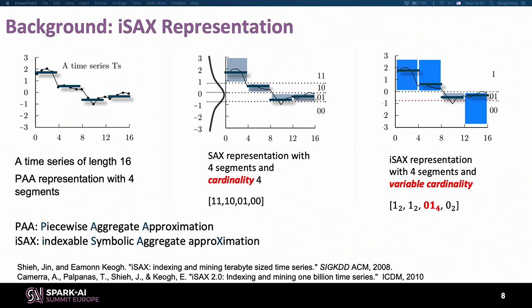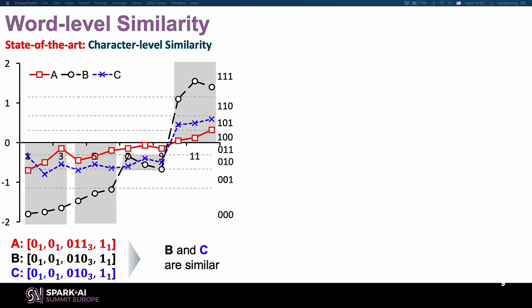We propose a new index technology. Let's look at the limitation of the current method, which we call character-level similarity. With three time series — red, blue, and black — we can easily see that the red and blue ones are similar. But if we use iSAX representation, we find that we cannot capture this similarity. The iSAX result shows the black and blue ones as similar instead. That is the limitation of character-level similarity.